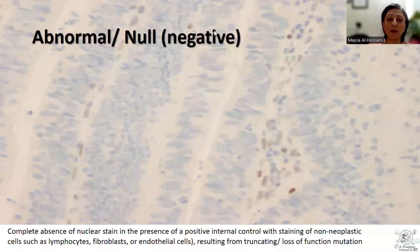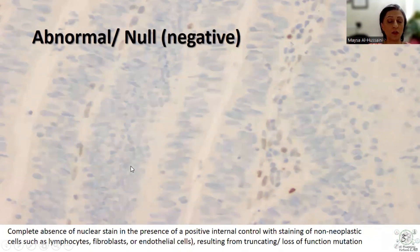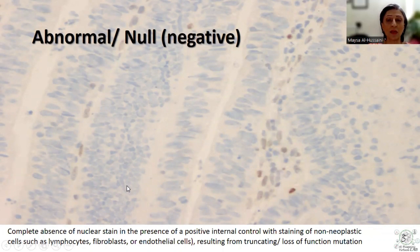The second pattern, relatively recently described, is the null pattern, or negative pattern, in which we see complete absence of staining in the nuclei of the tumor or lesion, in the presence of a positive internal control — some lymphocytes, fibroblasts, sometimes endothelial cells. This is the second most common pattern of abnormal P53 staining, termed the null pattern, and is associated with a different type of mutation, yet is considered to be mutant.